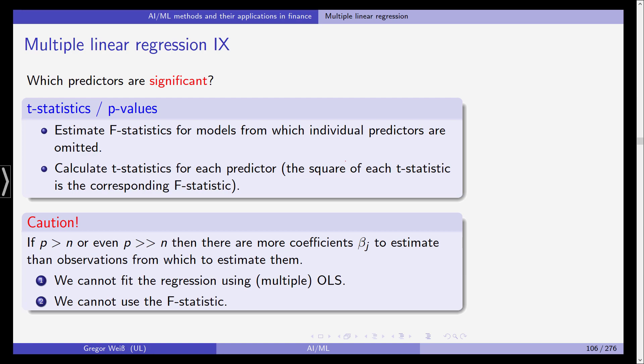So we have checked whether at least one predictor is significant. We can use T statistics and p-values based on these T statistics to check which predictors are significant. And in the next video, we're going to decide on the question which predictors we should choose.